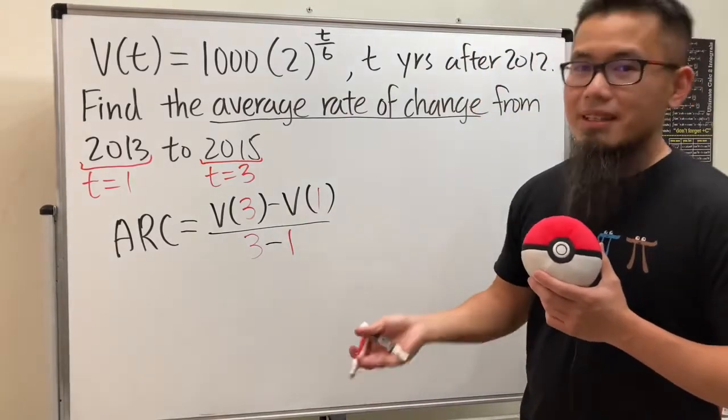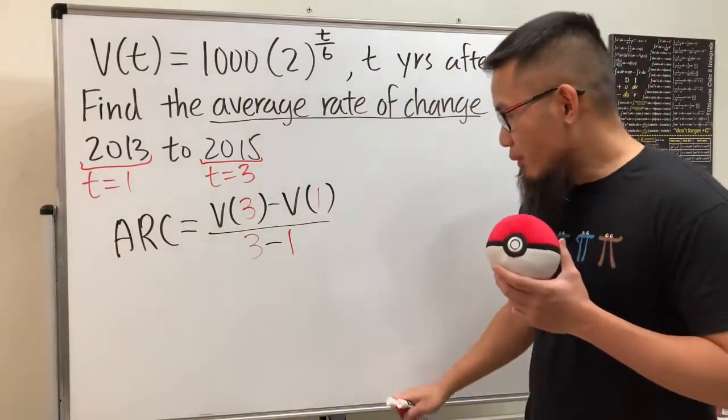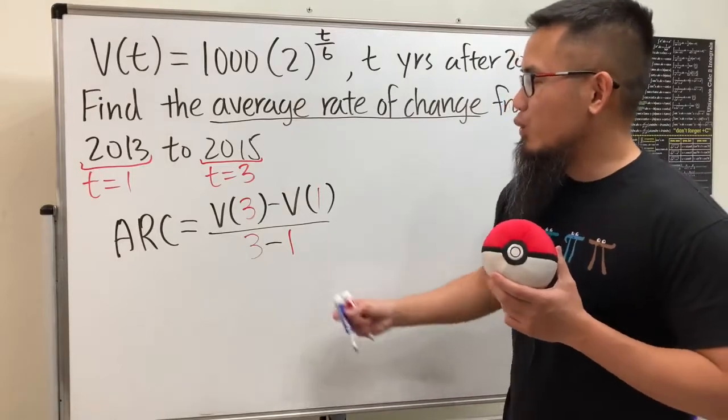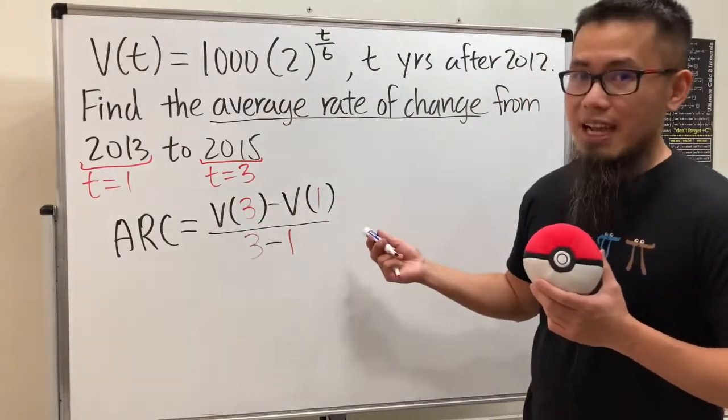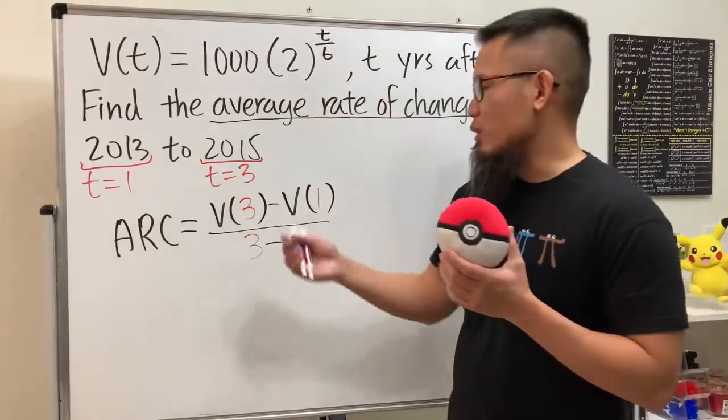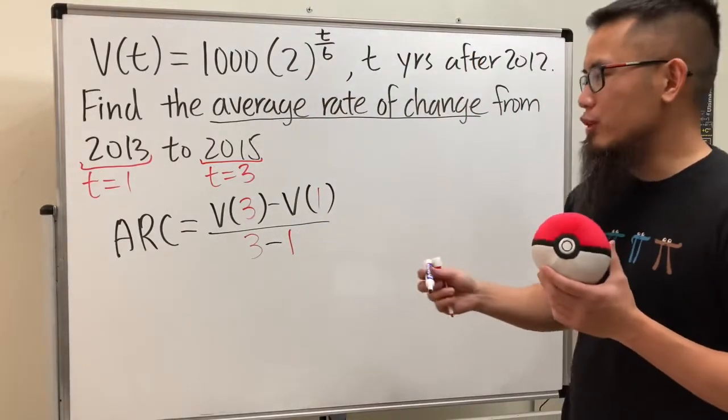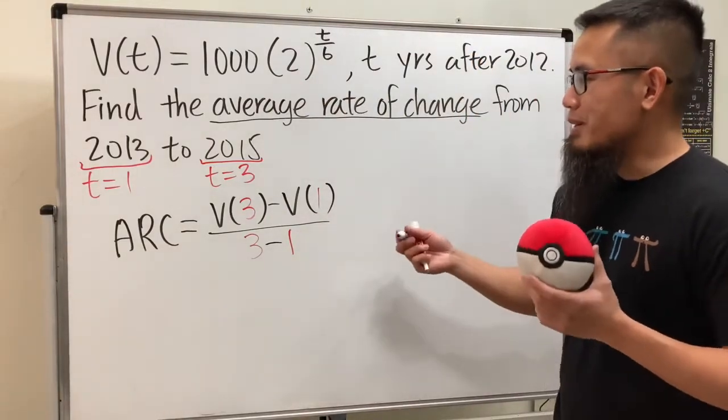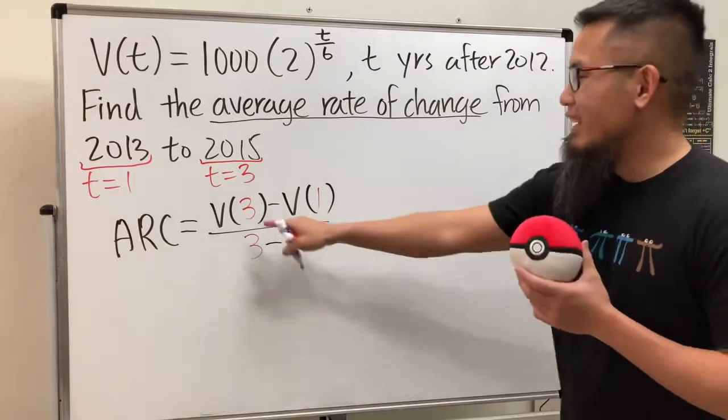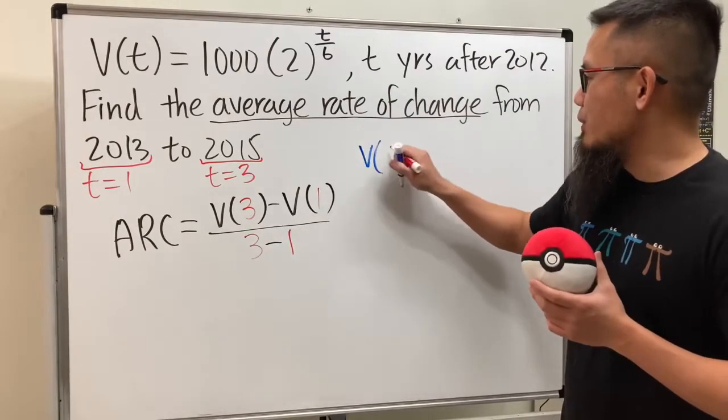And if you look at it, yes, this is just the slope. For this one I would recommend you guys to work out V(3) and V(1) on the side because the function and also the calculation part might be a little bit too heavy. So let me see, V(3), let me put that down for you guys.